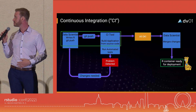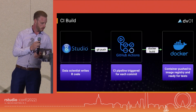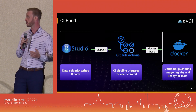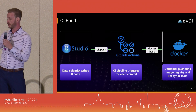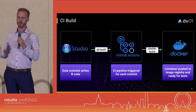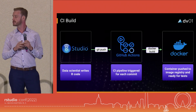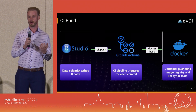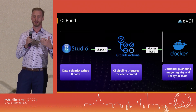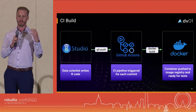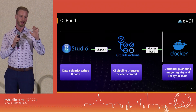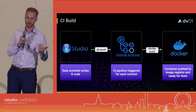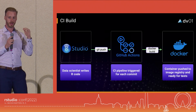In the CI build step, a data scientist is working in R Studio writing R code, and a push triggers GitHub Actions to kick off the continuous integration pipeline. GitHub Actions then builds a Docker image based on the updated code. It's important to push frequently — that way you get instant feedback on each piece of code. If you push 500 lines at once and something fails, it takes a long time to figure out what went wrong. But if you push a couple of lines at a time, you can isolate problems very easily.